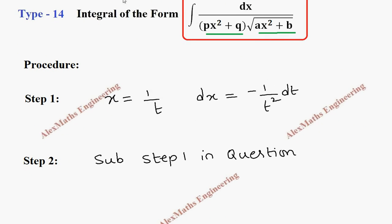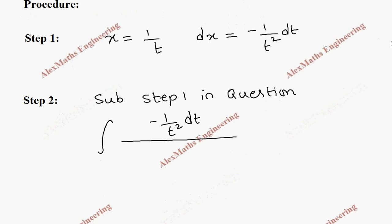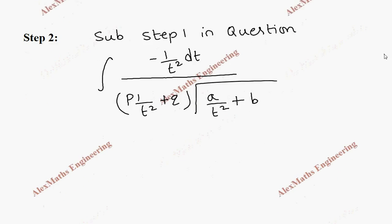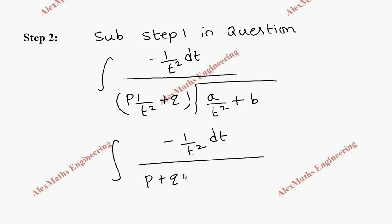Step 2: substitute step 1 so that we get the question in terms of t. The integral becomes: in place of dx we get minus 1 by t square dt, divided by Px² plus Q, where Px² is 1 by t² plus Q. After taking LCM this becomes P plus Qt² by t².